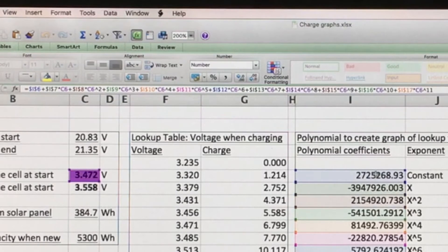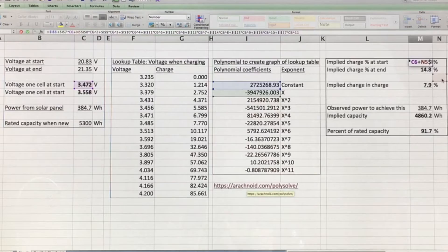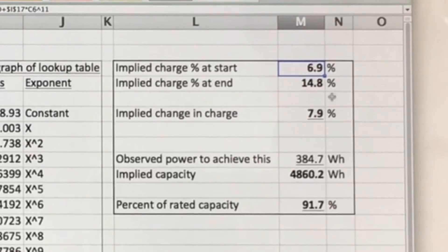So this first coefficient constant plus that times the voltage plus that times the voltage squared. You see C6 squared here. Plus the next one times the voltage cubed all the way along. And you get at the end of it these implied charges.